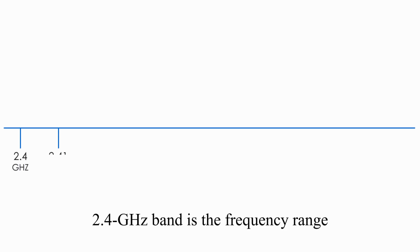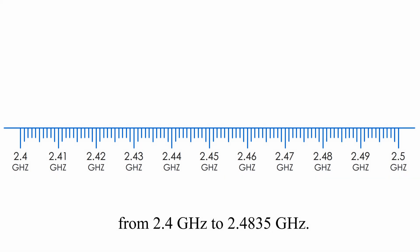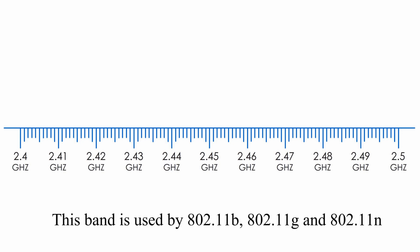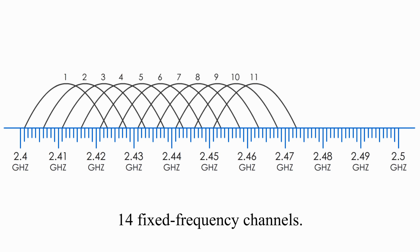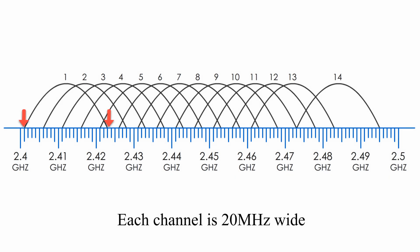2.4 GHz band is the frequency range from 2.4 GHz to 2.4835 GHz. This band is used by 802.11B, G, and N standards. The 2.4 GHz band is divided into 14 fixed frequency channels. Each channel is 20 MHz wide.